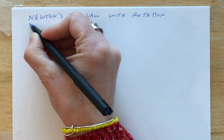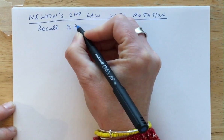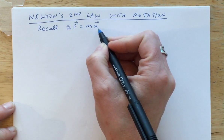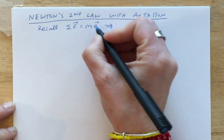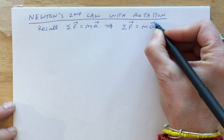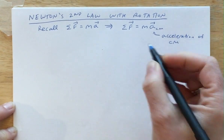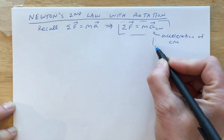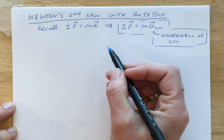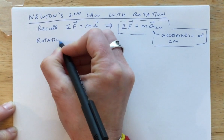If we recall Newton's second law in the linear world, the sum of forces was equal to the mass times the acceleration — the net force acting on an object causes that object's acceleration. To be specific, the net force equals the mass of the object times the acceleration of the center of mass. This is the acceleration of the center of mass, not of any particular point on the object.